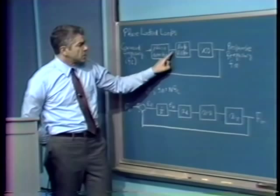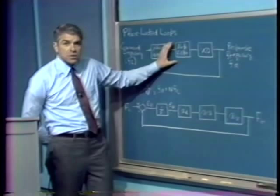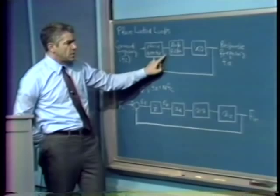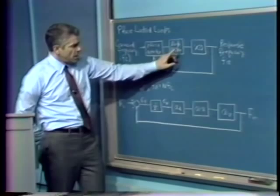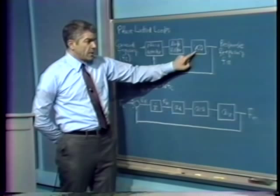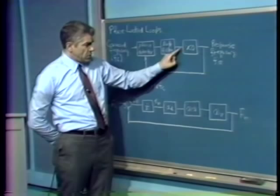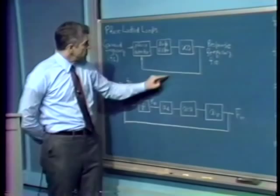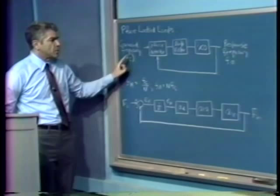If we have a loop with high desensitivity and large loop transmission magnitude, the response frequency should be very nearly identical to the command frequency. In fact, the phase difference between those two signals should be very, very small — hence the name phase-locked loop. If, in addition, we have a linear voltage-controlled oscillator whose output frequency is directly proportional to its input voltage, we're able to use the voltage at that point as a measure of the command frequency, and so use a phase-locked loop as an FM demodulator.